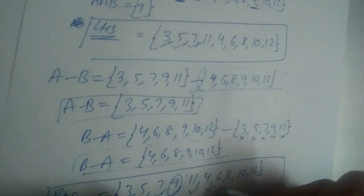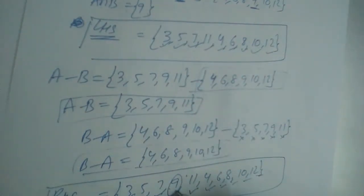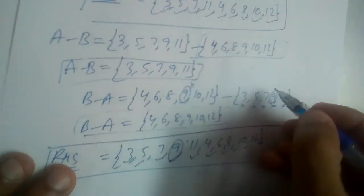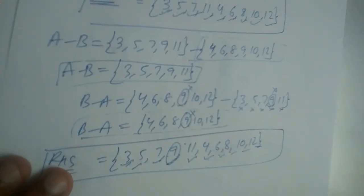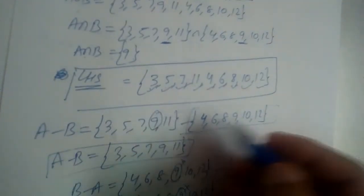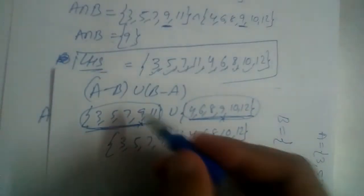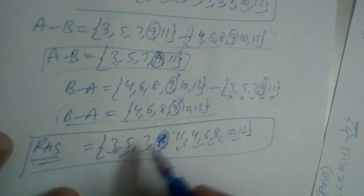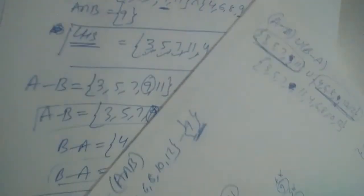Correction: in B minus A, 9 is common between B and A, so 9 should not be included — B minus A is {4, 6, 8, 10, 12}. Similarly in A minus B, 9 is in B so it should be removed — A minus B is {3, 5, 7, 11}. So RHS = A minus B union B minus A = {3, 5, 7, 11, 4, 6, 8, 10, 12}, which equals LHS. Hence LHS equals RHS and the identity is proved.